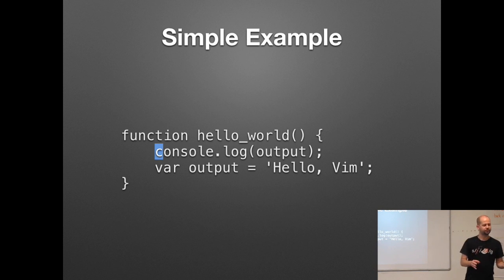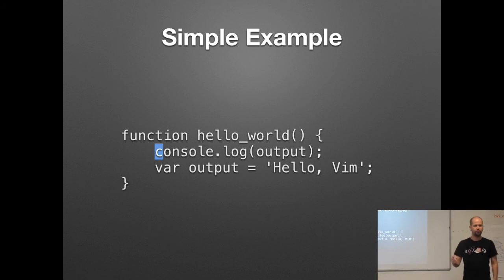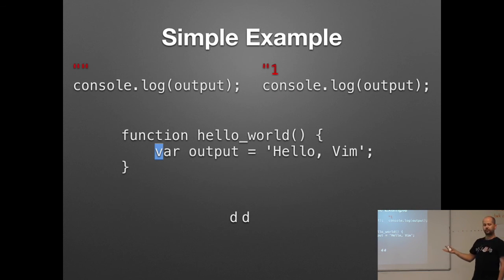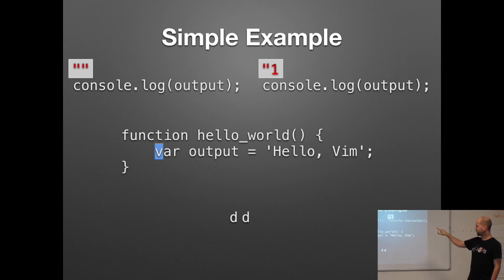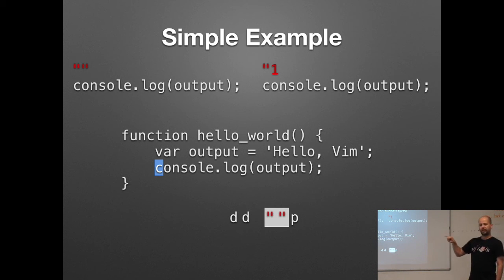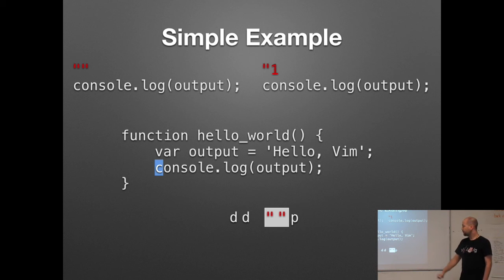You're probably using registers without realizing it. Here's a simple four-line function where two lines are swapped from what they should be — the variable is assigned after it's used, so I need to swap them around. The easiest way is to delete the line with DD. You can see that activated two different registers in VIM — both got a copy of that line. Then hitting the paste command reads from the first register and pastes the line beneath the cursor.